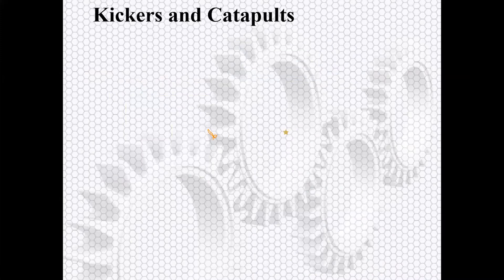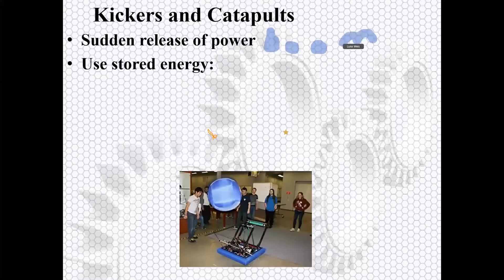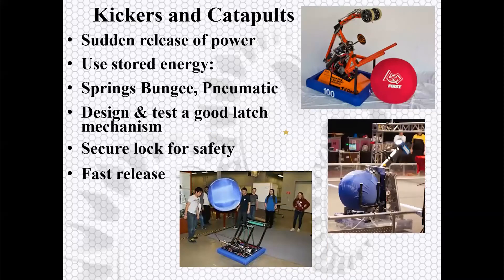Here are some catapults. This is why these are included with the winches and power calculations and motor calculations — it's a sudden release of power. Usually we have stored energy going on. This one is a catapult system. This one is a pneumatic one — Thor's hammer, which I believe is from Mechatronics out of Alexandria. All of these are talking about lots and lots of power being released very, very quickly by some mechanism. There are a lot of different ways to do this. Some are more dangerous than others, some are more reliable than others.